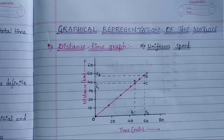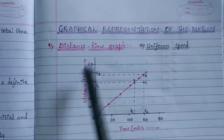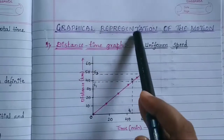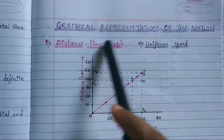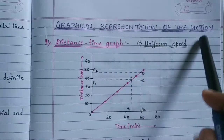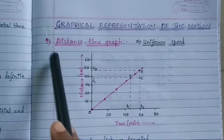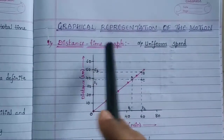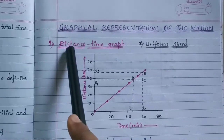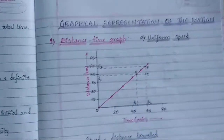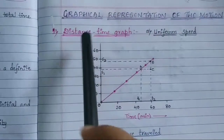Hello everyone, welcome back to my channel. Today we are going to study the graphical representation of motion, that is how we can represent motion in the form of a graph. There are two types of graphical representation: the first one is the distance-time graph and the second one is the velocity-time graph.